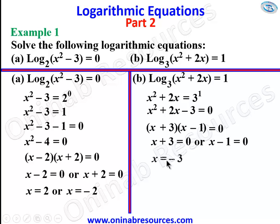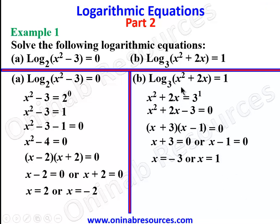Applying x + 3 = 0 or x − 1 = 0, solving gives x = −3 or x = 1. Substituting these values: for x = −3, we get 9 − 6 = 3, and log 3 to base 3 gives 1. For x = 1, we get 1 + 2 = 3, and log 3 to base 3 also gives 1. We are done with 1b.